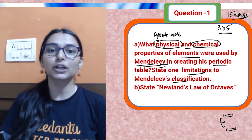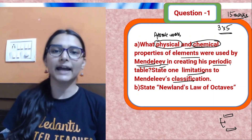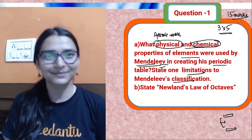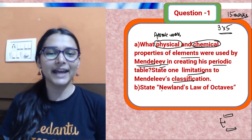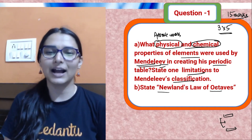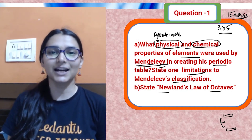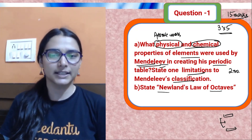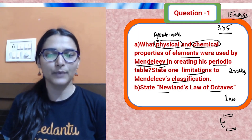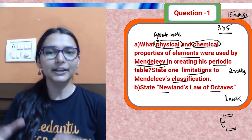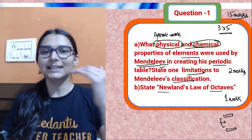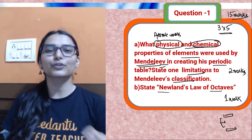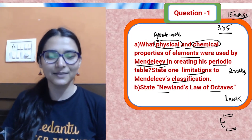State one limitation — there were many. You can mention hydrogen's position was not justified, wrong order of atomic masses, or isotopes. Next, state Newland's Law of Octaves precisely, as it carries two marks. Newlands said that when elements are arranged in increasing order of atomic masses, every eighth element resembles the first element in terms of chemical properties.